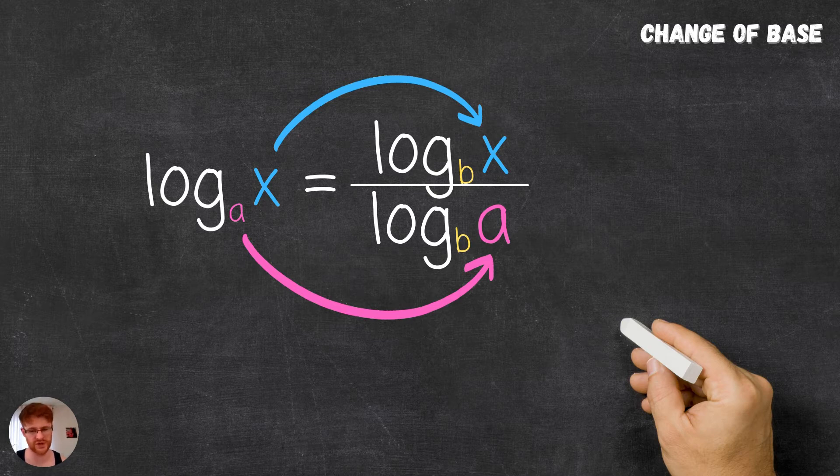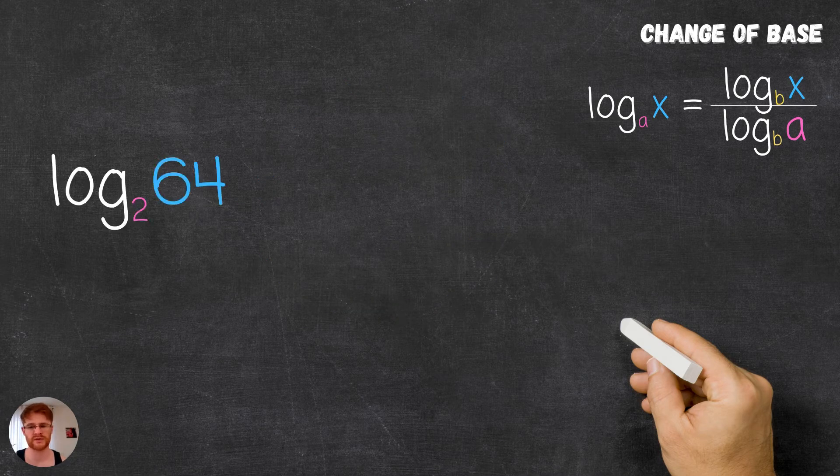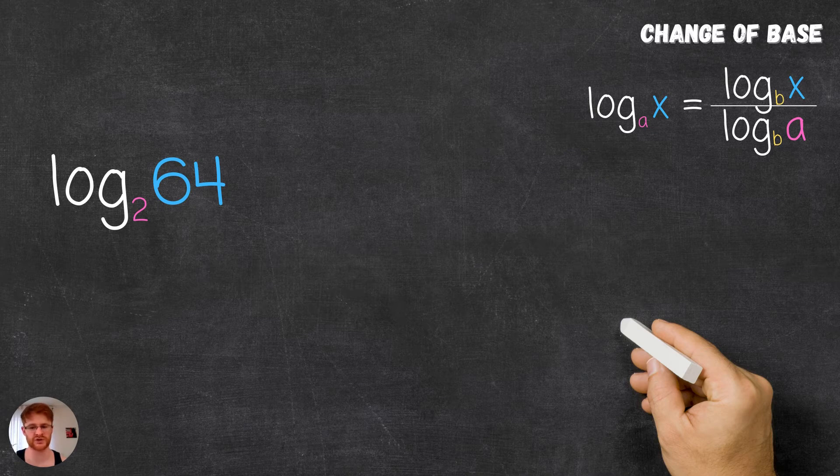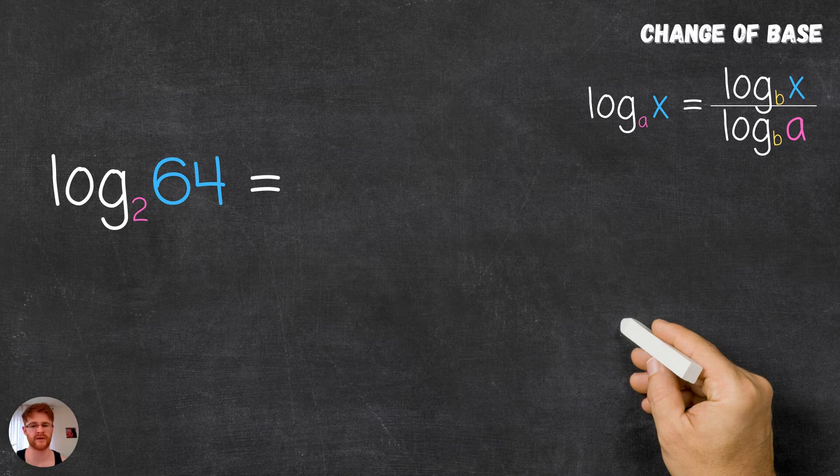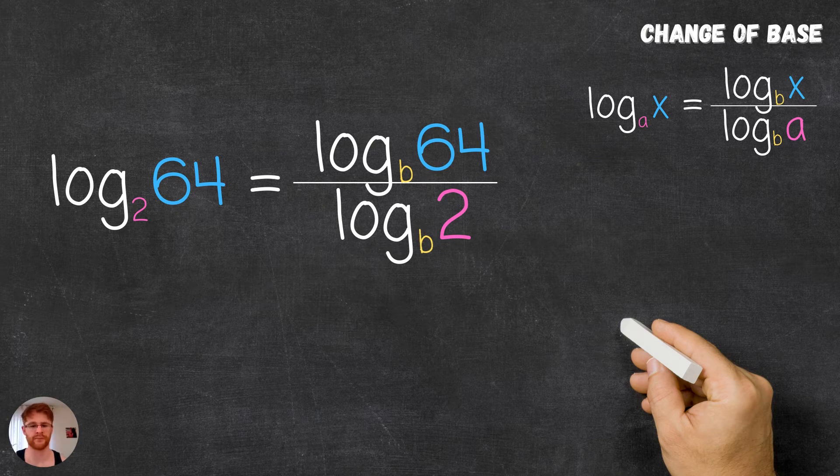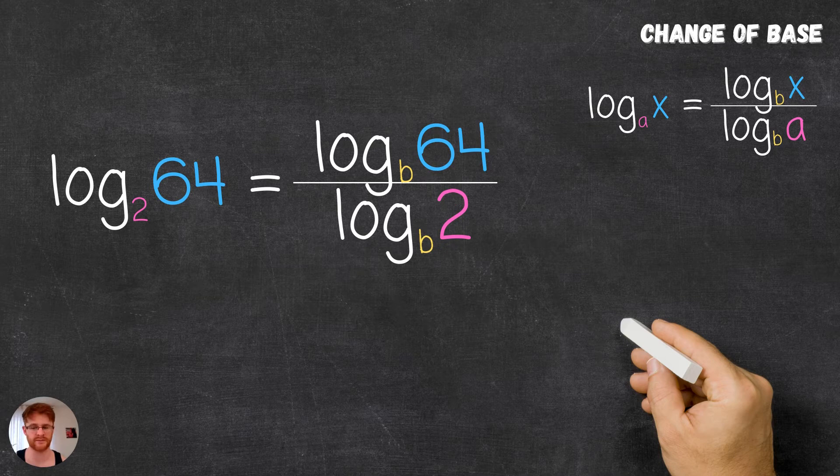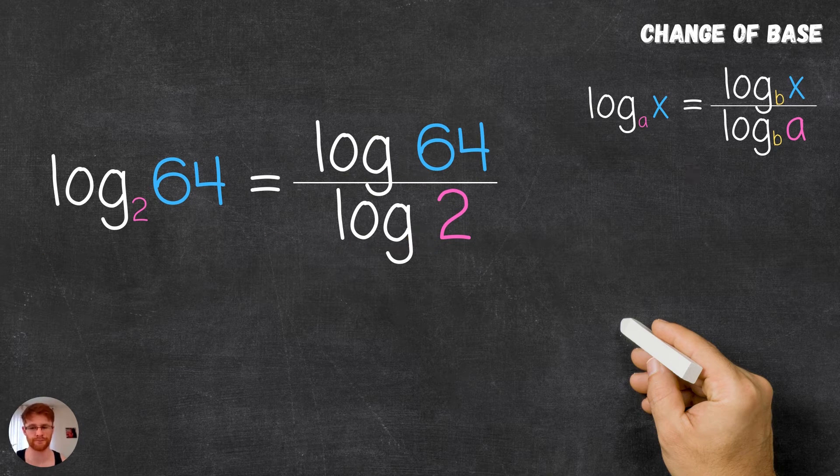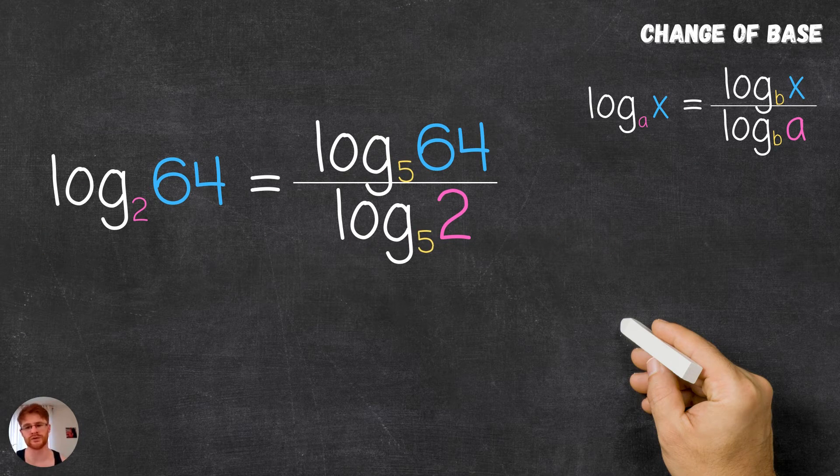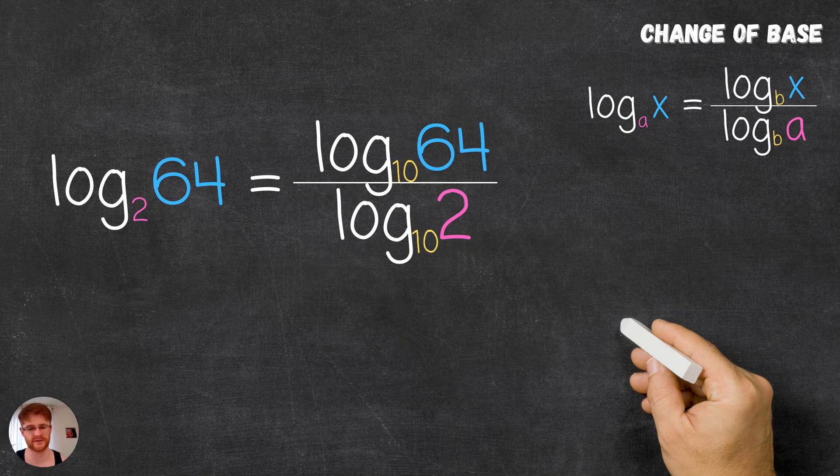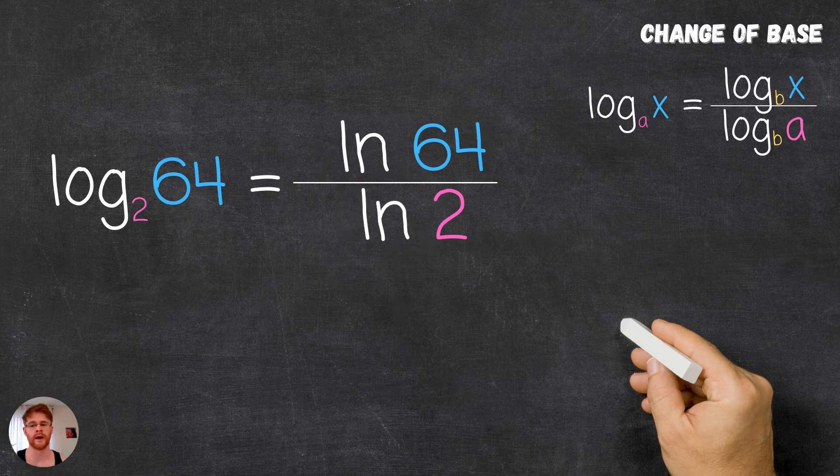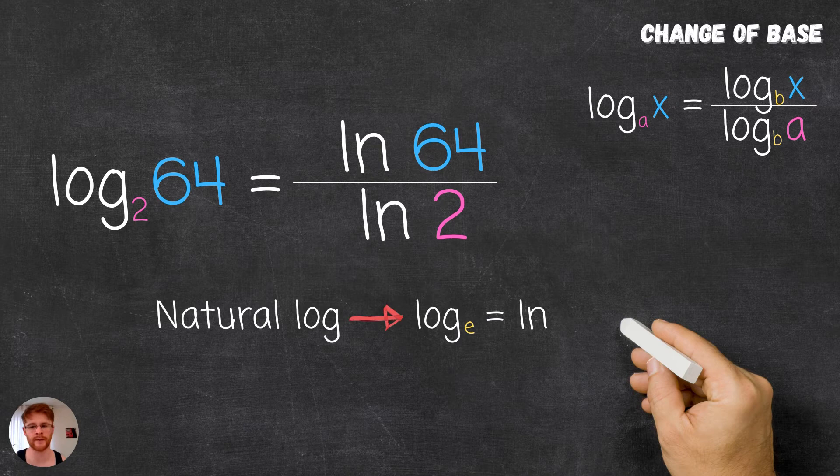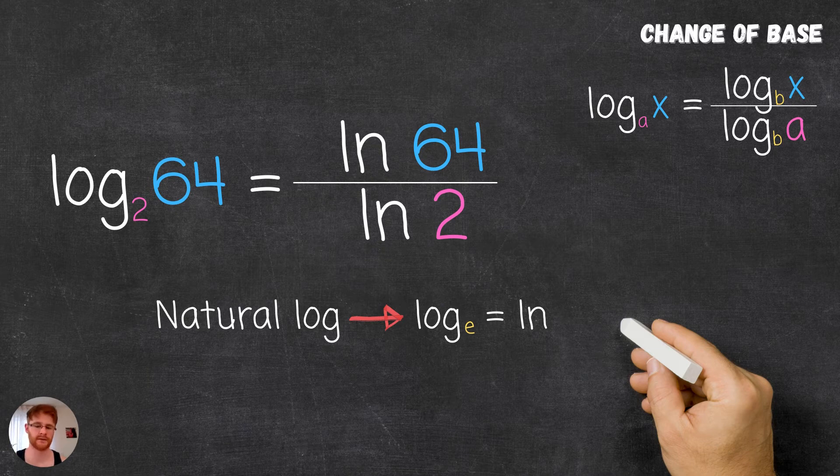Now using the example we looked at earlier, log base 2 of 64 can be written in terms of any base we like—that is, log of some arbitrary base b of 64 over log of that same base b of 2. This relation holds true for any base which we might want to change to. For example, we might want to change to a base of 5, or base 10, or base e, which we could just write as ln, which is the natural log.